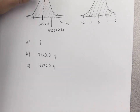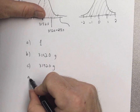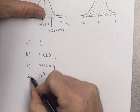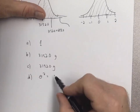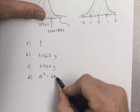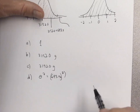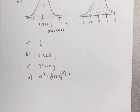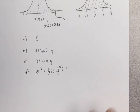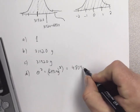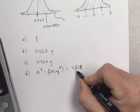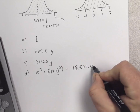The variance is always the standard deviation squared. So you take 693.4 grams and square it — remember the units become grams squared. So 693.4 squared gives us approximately 480,843.56 grams squared.